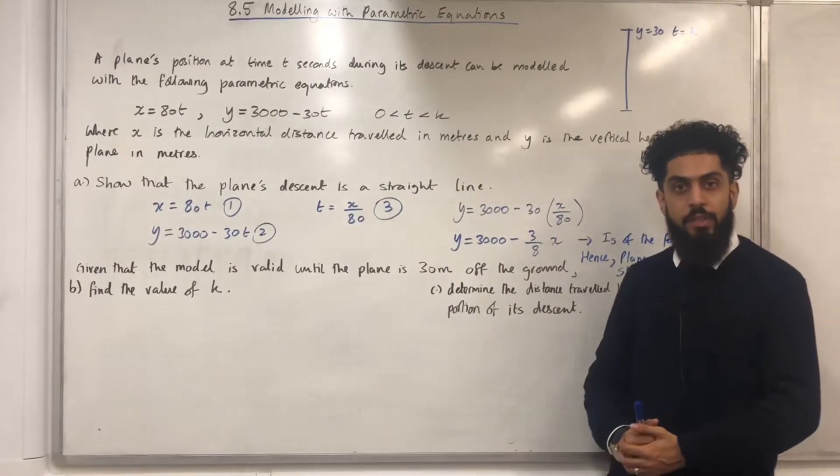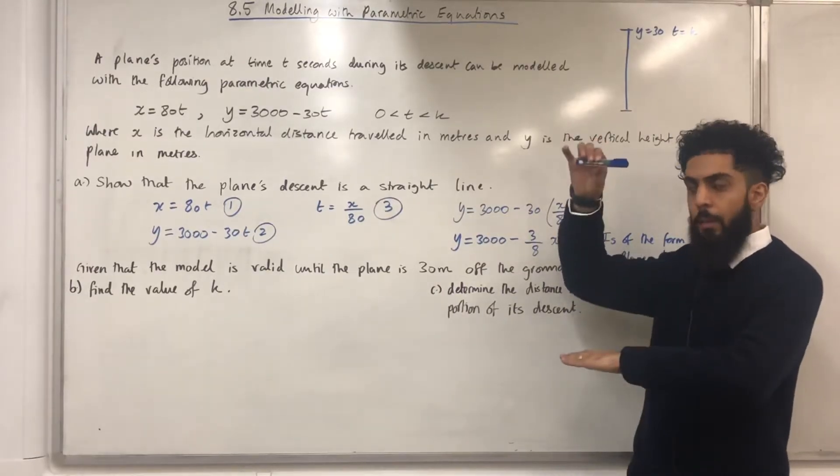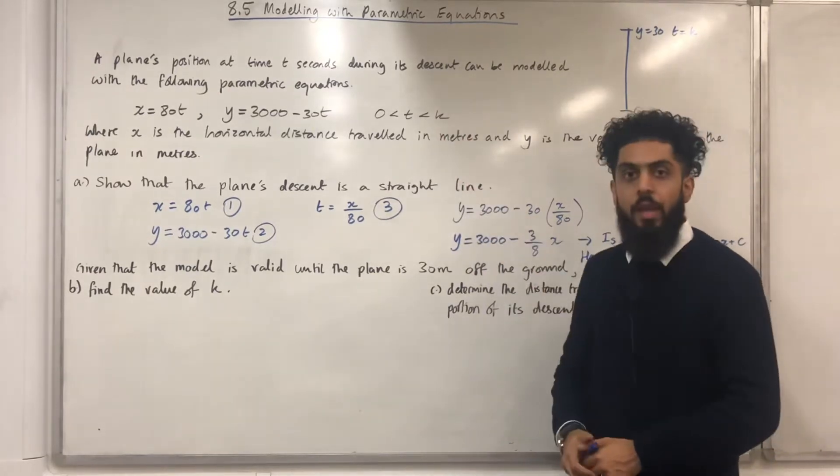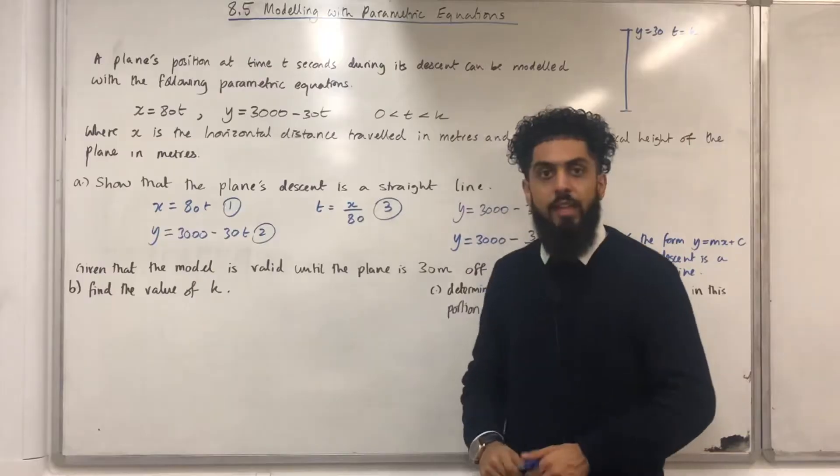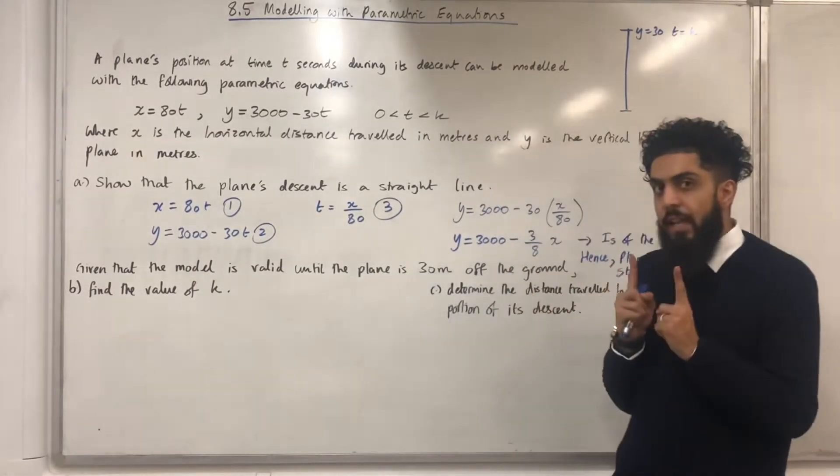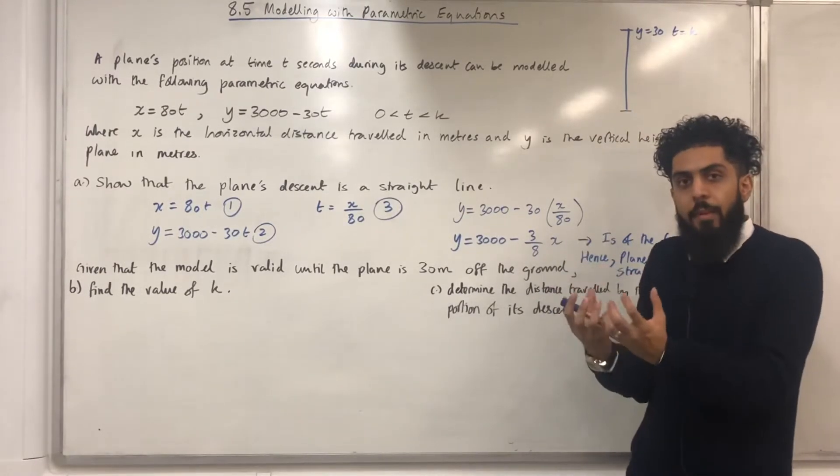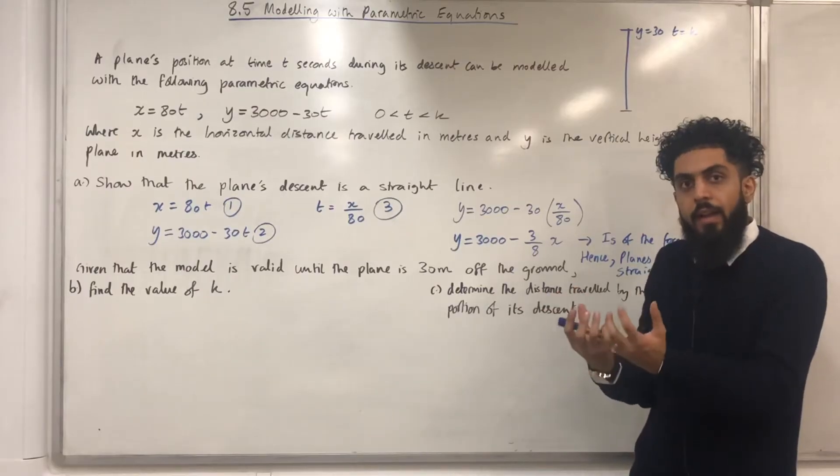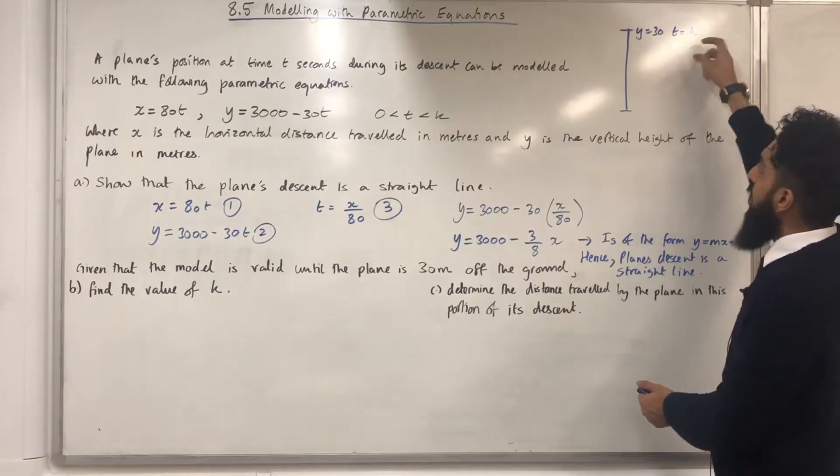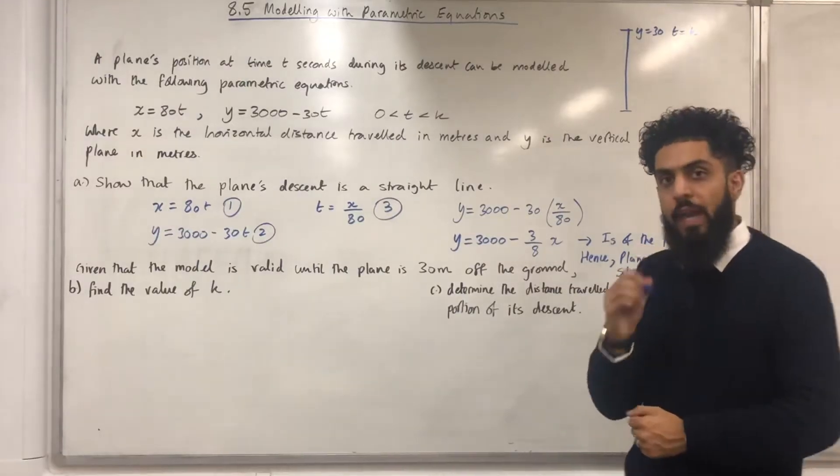Moving on to the next part of the question. Given that the model is valid until the plane is 30 meters off the ground, part B, find the value of k. Now, k represents the end limit of t. We know that x is the horizontal distance and y is the vertical height. It says given that the model is valid until the plane is 30 meters off the ground, that means that the maximum value of y is 30 meters and we want to work out the corresponding value of k for which y is 30 and that k represents t. So I start off by writing y equals 30.